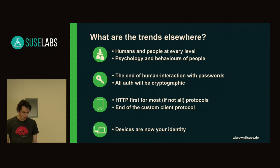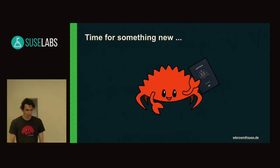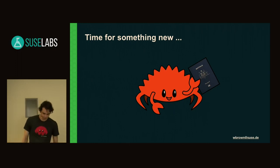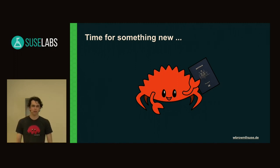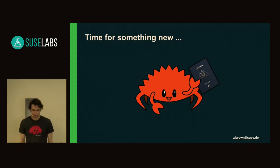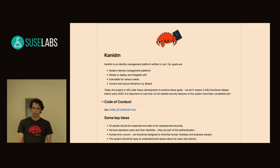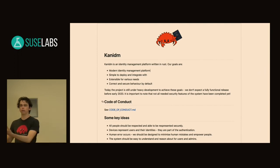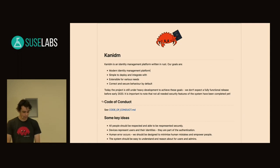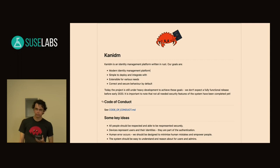With these trends in mind, today I'm actually talking about one of my side projects and what I'm doing and why I thought it was time for something new. I've been working on a new identity management project for the last year in my free time and a little bit of my SUSE Labs research time. It's named KaniDM, and the whole point of this project is that I wanted to write something that was modern, understood these trends, and was developed with a framework where we could continue to extend it for managing trends that we haven't preempted yet.